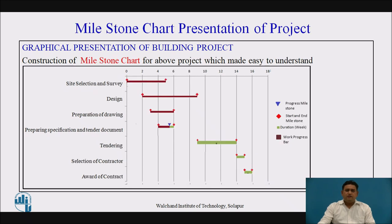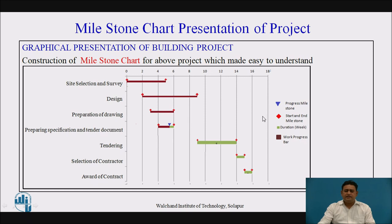This is the second graphical representation, the milestone chart. The same project is represented using milestones. These milestones represent the starting and ending points, and can show the progress of work through a second milestone chart shown in blue color.